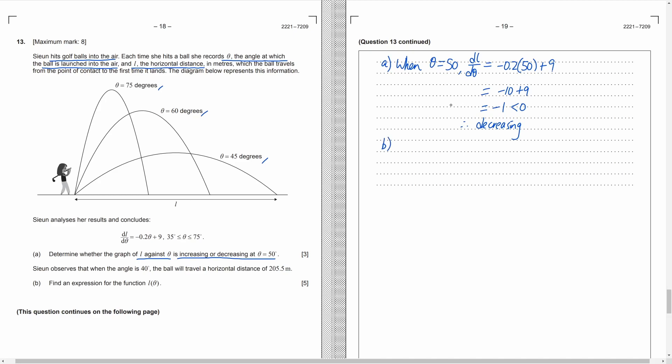Part B, when the angle is 40, L will be 205.5 and we need to find function L in terms of theta. We have L's derivative and we need to find L. So, we need to do integration on that first. Add the index by 1 and then divide it by the index. Of course, don't forget to add the constant C. After that, in order to find C, we put the information provided back to the equation. L is 205.5 and theta is 40. Solving a linear equation and we get C equals 5.5. Finally, we just substitute 5.5 for C and write the equation.